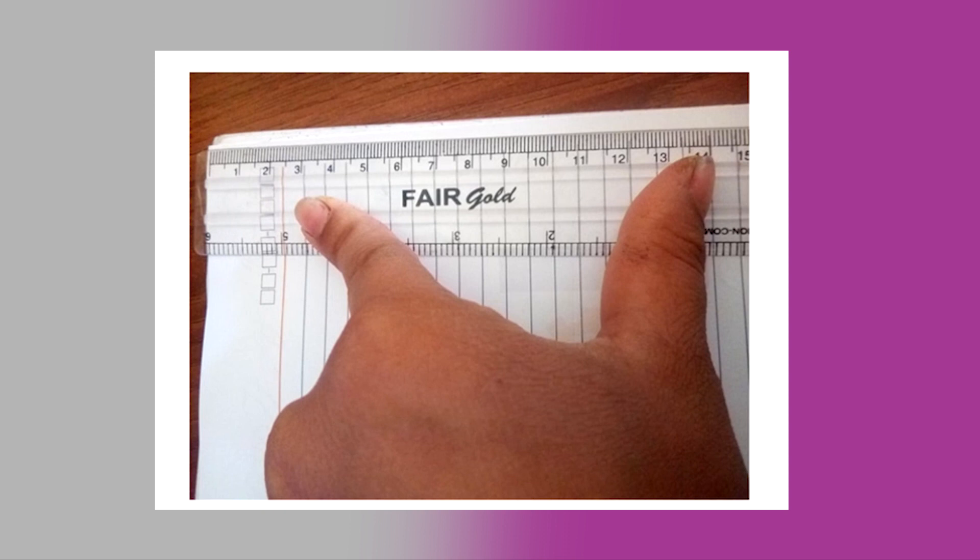In conclusion, we can say that measurement is a comparison of an unknown physical quantity with a known standard quantity. For example, the length of a copy is an unknown physical quantity, but the scales and ruler, that is the standard quantity. So we compare it and the process is called measurement.